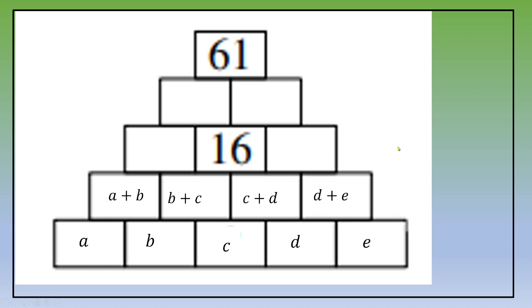Now, if we focus on row number three, the cell left to 16, this is a plus b plus b plus c, this is a plus 2b plus c. The cell located right to 16, this is c plus d plus d plus e, this is c plus 2d plus e.